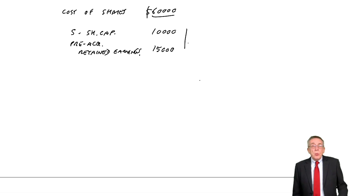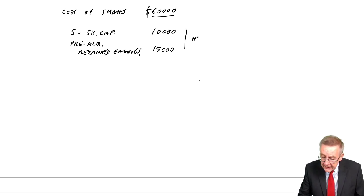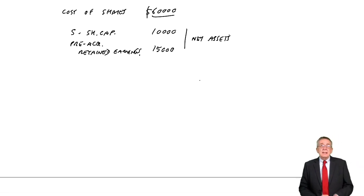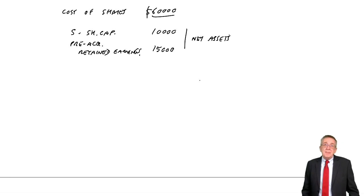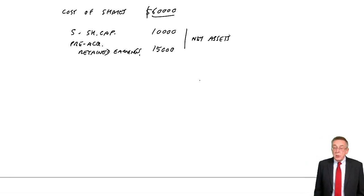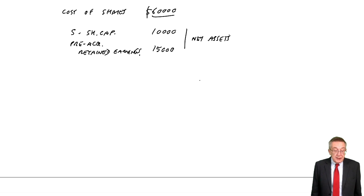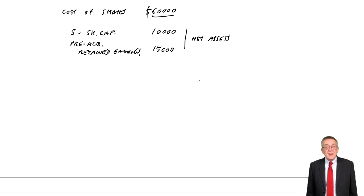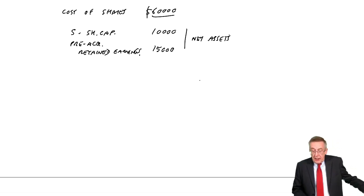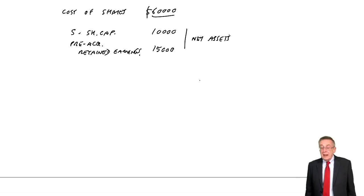As I said, there are two reasons. One reason could be that even though on S's statement the net assets would have been £25,000, we could have decided the assets were actually worth more. Maybe one of S's net assets was a building which they've been showing at cost, but if that building is worth more, we'll have to pay more. The fair value of the non-current assets was £9,000 more than the carrying value — maybe a building shown at £5,000 that we decide is actually worth £14,000, so we're going to have to pay £9,000 more.